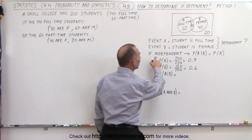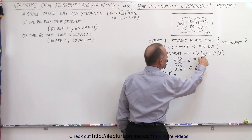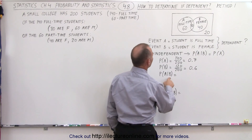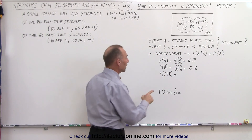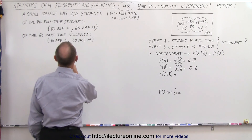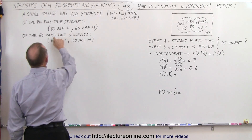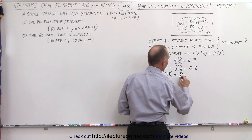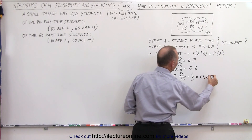Now, if they are independent events, then the probability of A, which is 0.7, should be equal to the probability that A will occur given that B has occurred. Let's see what that equals. If B has occurred, that means the student is female. So what is the probability that the student will be full-time, given that it is a female student? Out of the 120 female students, 80 of them are full-time. So that would be 80 out of 120, which is 2/3, equal to 0.667.